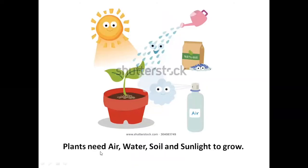Plants need air, water, soil and sunlight to grow. So children, all these are friends of plants. They help the plant to grow from a small sapling to a big tree.